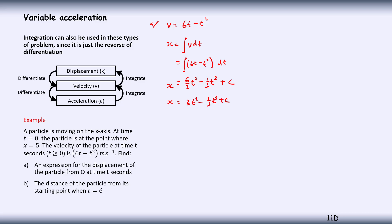Simplifying, we've got x is equal to 3t squared minus 1 third t cubed plus c. Now I want to find out what c is. I'm told that when time t equals 0, displacement x equals 5. So I sub those in: 5 is equal to 3 times 0 squared minus 1 third times 0 cubed plus c, which means, since those two terms are 0, c is equal to 5. So I can write my displacement: x is equal to 3t squared minus 1 third t cubed plus 5. That's part A sorted.